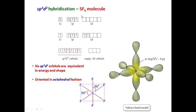The example of SP3D2 hybridization is the SF6 molecule, where sulfur is the central atom. After electron promotion, sulfur undergoes SP3D2 hybridization to form six hybrid orbitals that are equivalent in energy and shape, arranged in octahedral geometry. Each SP3D2 hybrid orbital of sulfur overlaps with the pure P orbital of fluorine to form six sigma bonds. Thank you for watching.